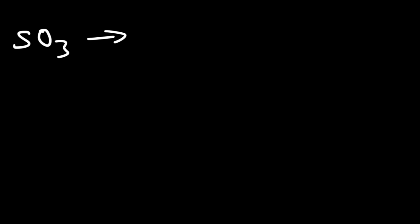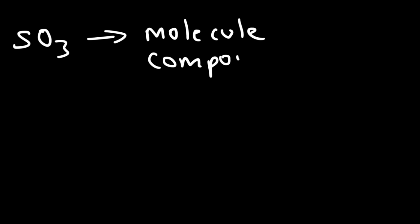Now for a mini quiz: I'll give a list of pure substances and you characterize them as atoms or molecules, pure element or compound, and if a compound whether ionic or molecular. Sulfur trioxide is made up of many different atoms, so it's a molecule. Because it's composed of different atoms, it's not a pure element — it's a molecular compound, a compound that consists of molecules.